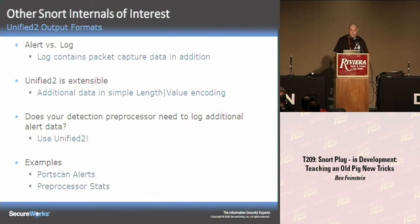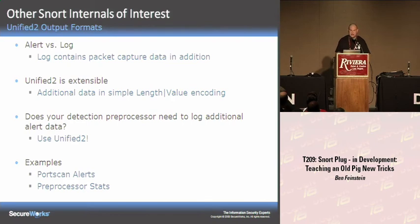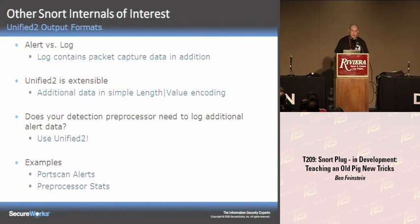A few other internals: alerting versus logging. Logs contain the packet capture data in addition to the alert summary; alerts are just the summaries. Unified2 is an interesting addition — an extensible output format. You can encode additional data from your preprocessor using length-value encodings into that Unified2 stream. If your preprocessor wants to log additional data, you should use Unified2. The Sourcefire code base is moving to use Unified2 to gather preprocessor statistics, performance statistics, and things like port scan alerts.